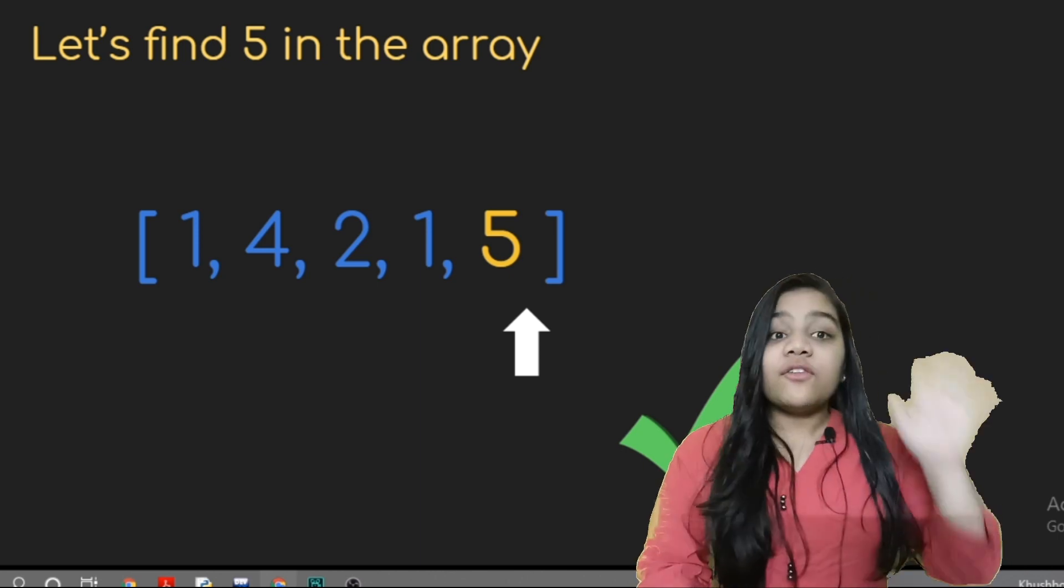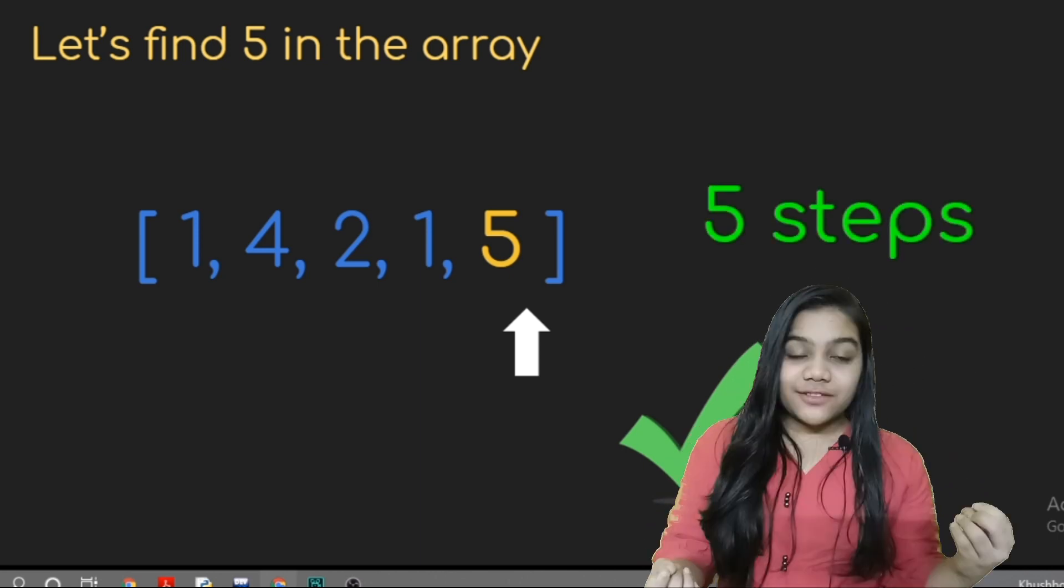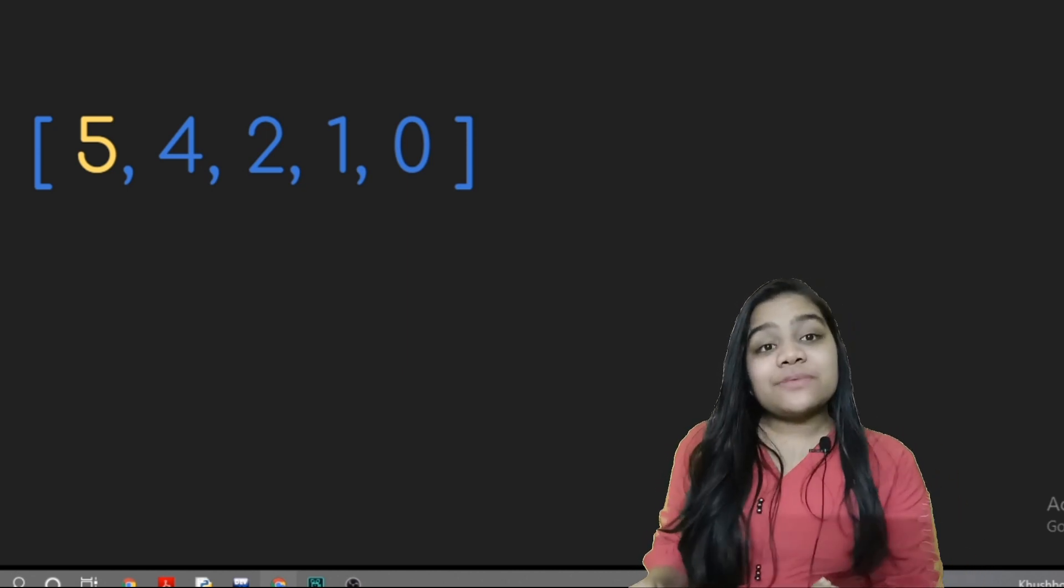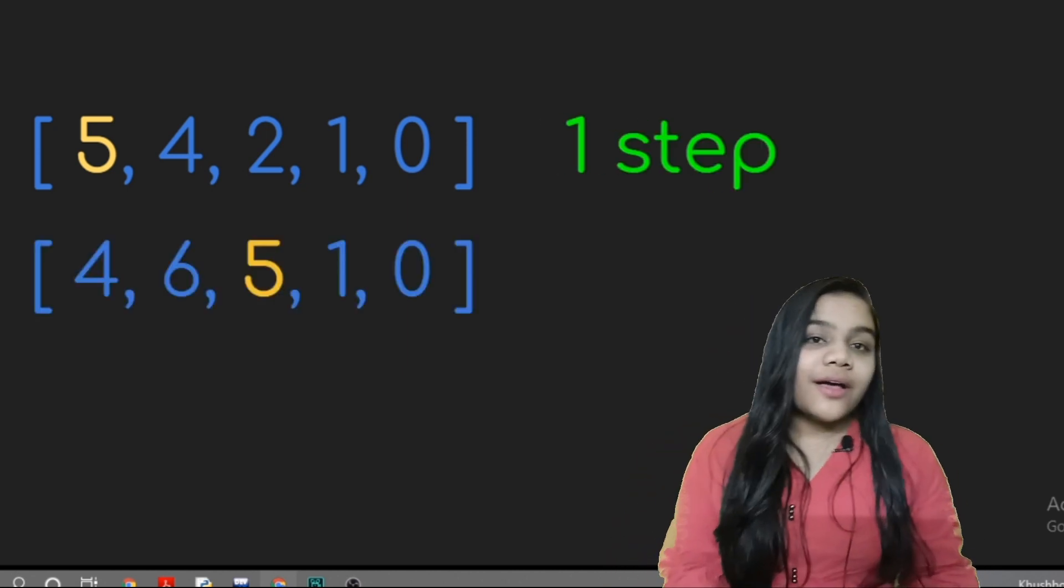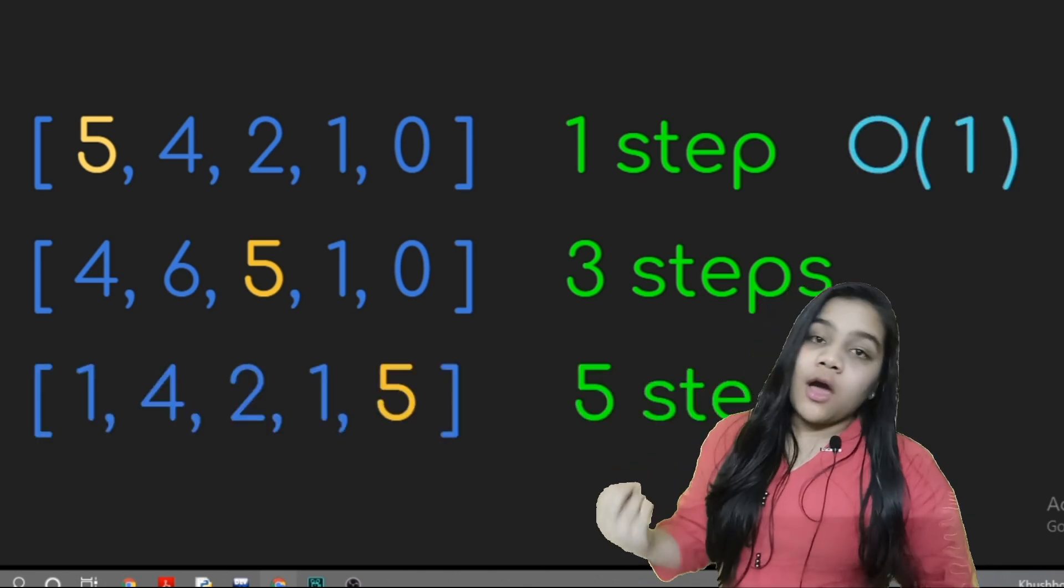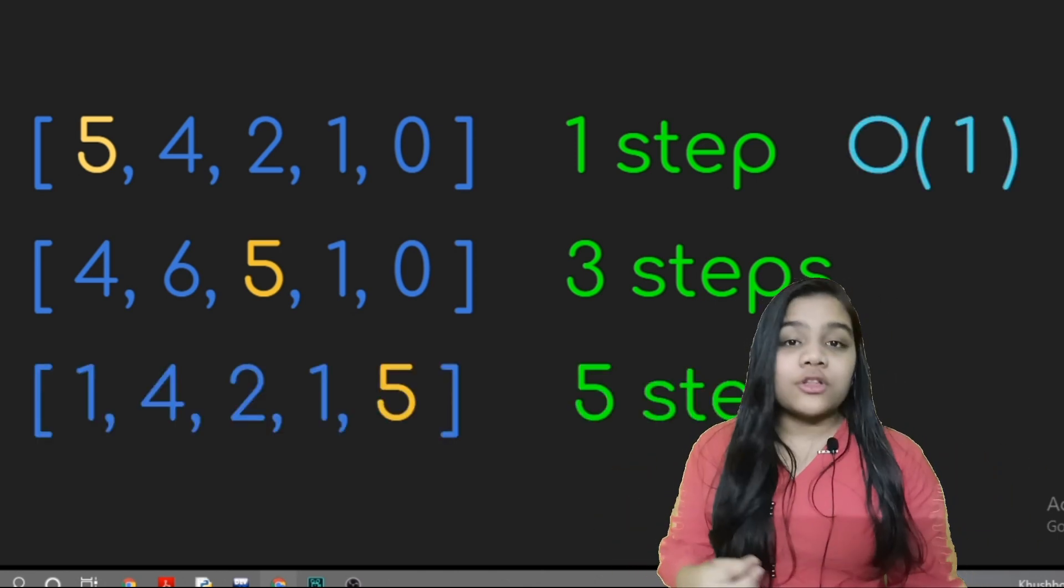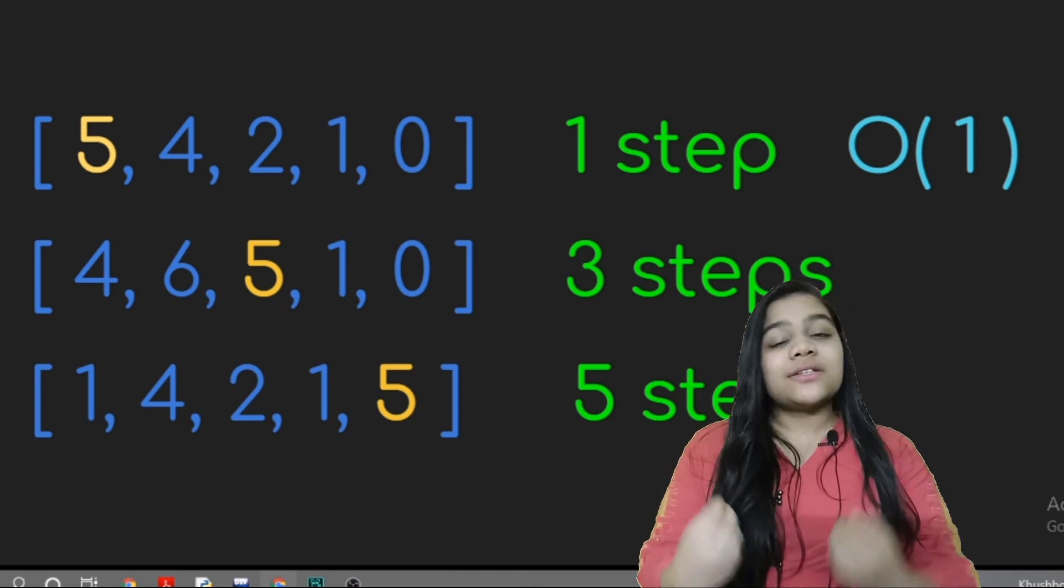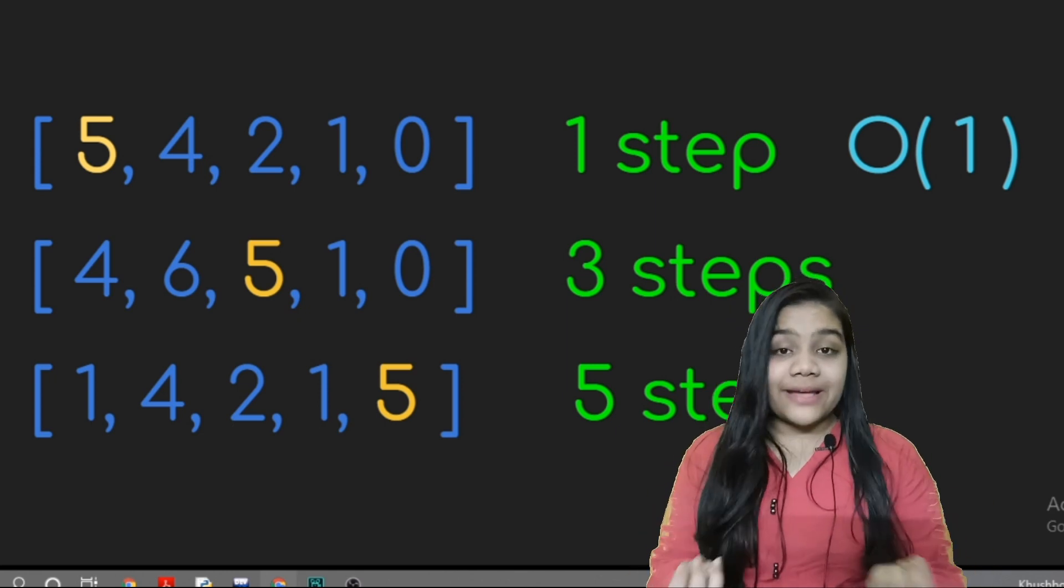This happened in 5 steps. So in an array, if we are searching for any element and it is present at index 0, then to find it our complexity will always be the same and it will not depend on the size of the array. So it is a constant complexity of O(1).